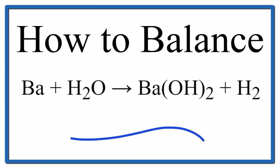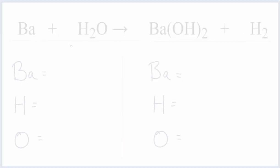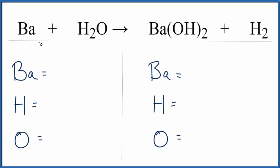To balance this equation, barium plus water yields barium hydroxide plus hydrogen gas. Let's add the atoms up on both sides of the equation. We have one barium atom. We have two hydrogen atoms and one oxygen.